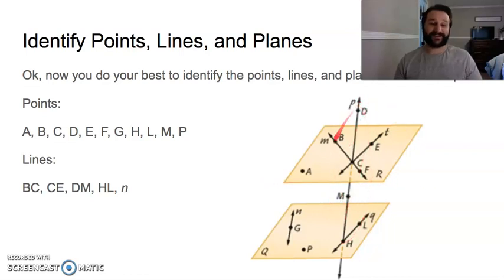So this line DM, this one goes through both planes here. Could also be line MD. It also includes point H here, so it could be line DH, line MH, line HM, line HD. Then we've got line CE, could be also line T. Oh, I forgot, with DM, it could also be line P here. We've got line T, which is also line CE or EC. And then we've got BC, which could also be BF or FC or FB or just line M.